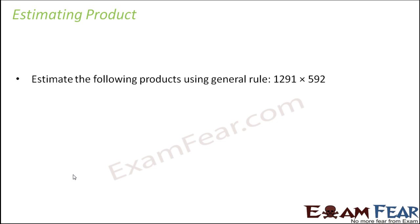Let us take an example. Estimate the following product using general rule: 1291 × 592. So let us first actually see what is the product that we get. 1291 × 592, so what we actually get is 2582, 11619, 6455.